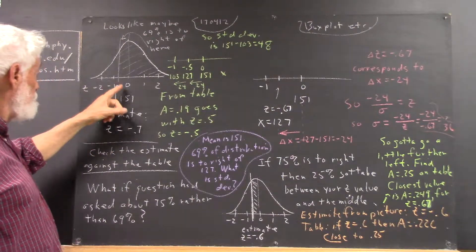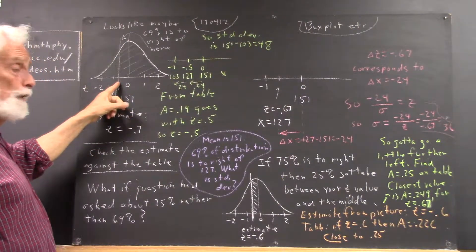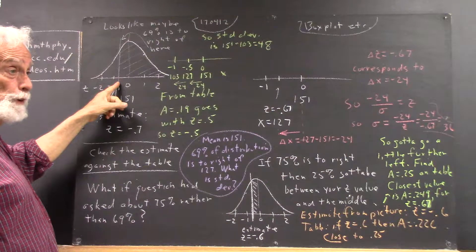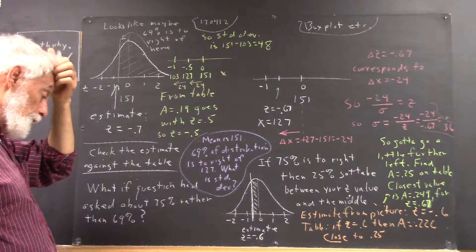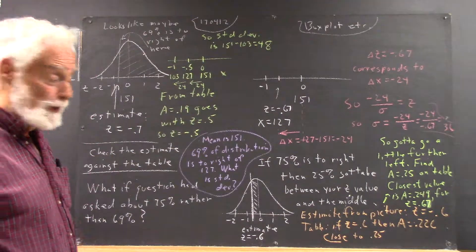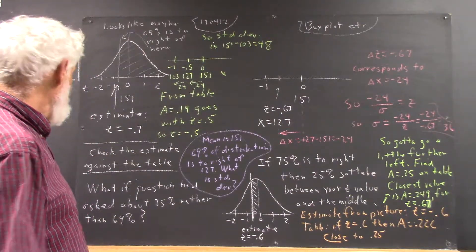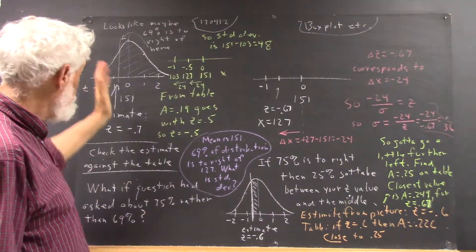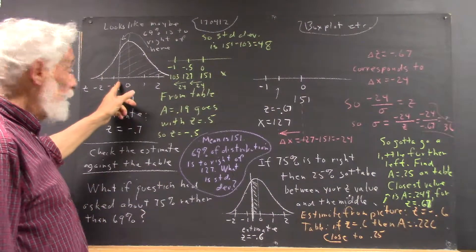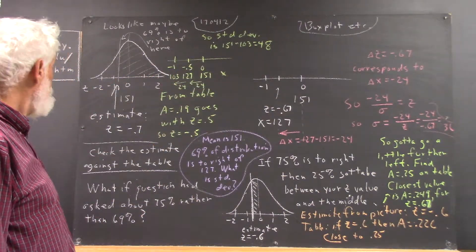Now, that looks like it's between 0 and negative 1, closer to negative 1, maybe at negative 0.7. And actually, I think if you go to negative 0.7, because some people did use that as their estimate, you do get something pretty close to 75%. Still, that's not bad. You know, we're just trying to ballpark it and get a reasonable figure.